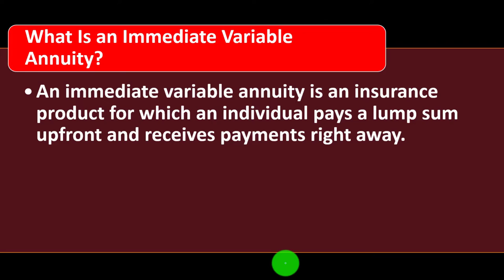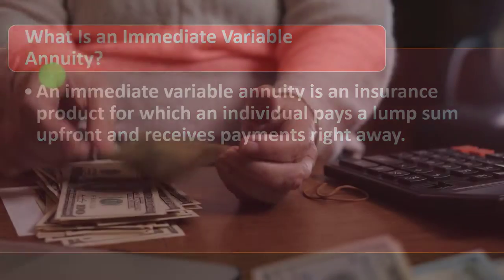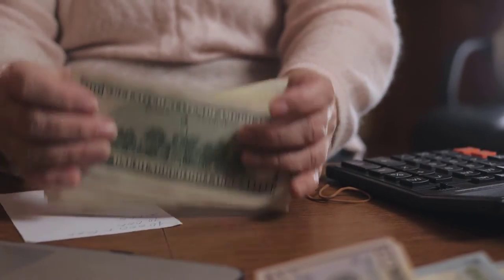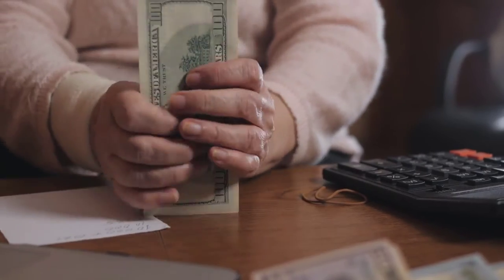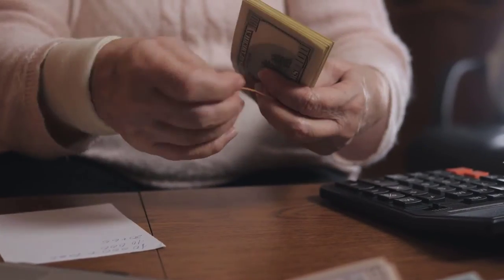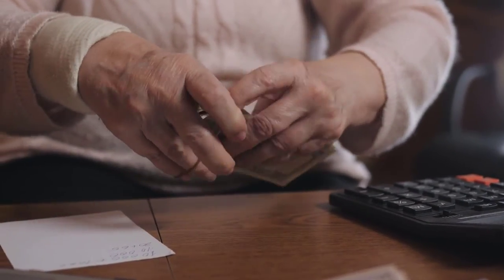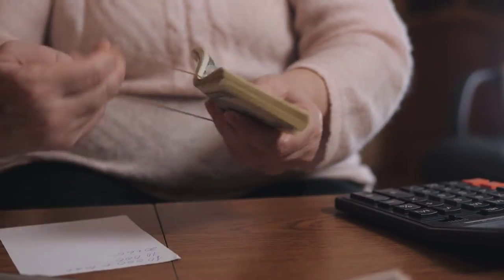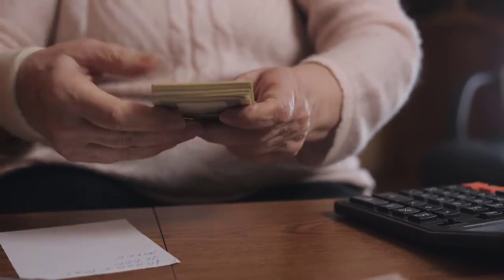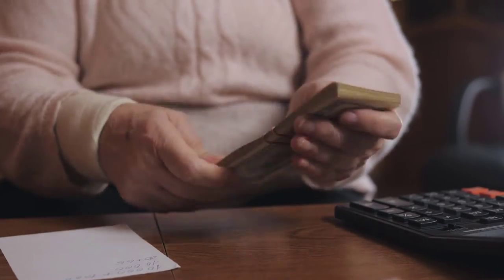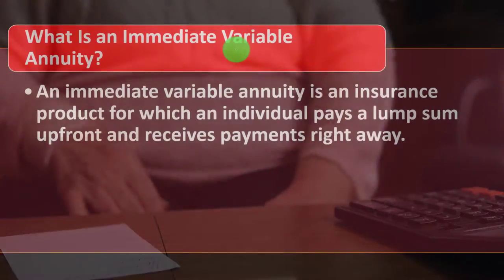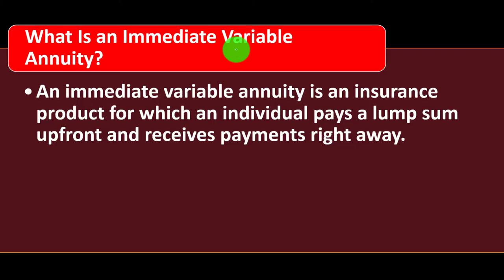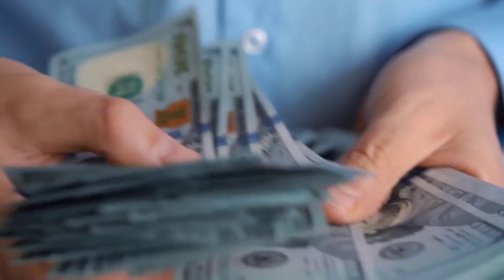An immediate variable annuity is an insurance product for which an individual pays a lump sum up front and receives payments right away. When we think about an annuity in general, we think about a series of payments. Normally those payments are the same amount, but in this case we've got a variable annuity — so we're going to have a series of variable payments, putting the money up front as a lump sum.